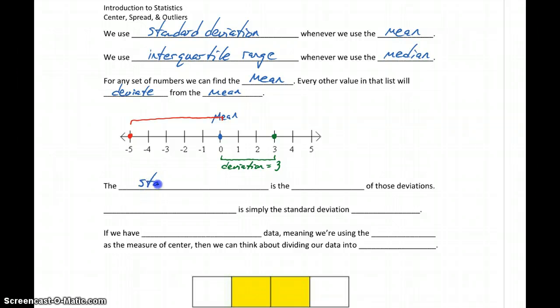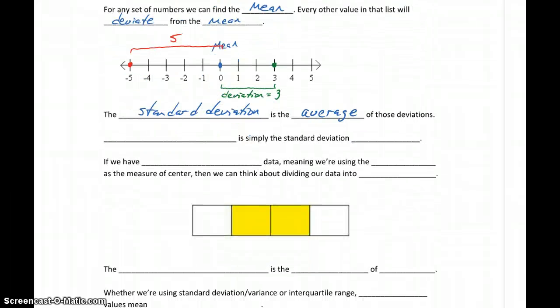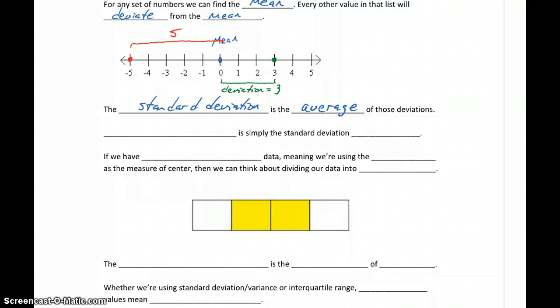So the standard deviation, in order to calculate it, essentially what we do is we take all of these different deviations, so in this case a deviation of three, a deviation of five, that difference between each data value and the average. So we average all of those different deviations, and that gives us the standard deviation. So we're not going to calculate that by hand. We're going to rely on StatCrunch to take care of that for us. But to give us an idea of where that number comes from, it's just the average of all of these differences between our individual data points and the mean of that data set.